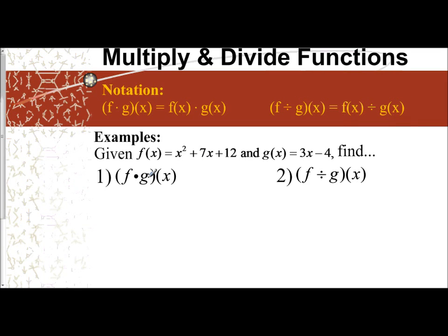So if I'm taking f times g of x, we're going to write it out. I have x squared plus 7x plus 12 as f. Put it in parentheses. So x squared plus 7x plus 12, and I'm multiplying by g of x, which is 3x minus 4.